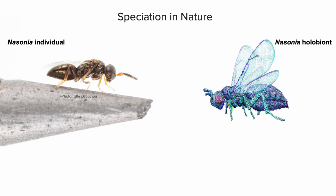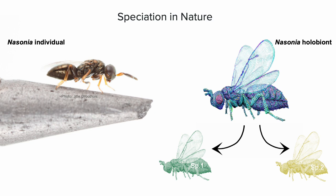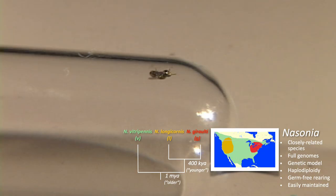Speciation in nature, if you accept some of those arguments, is not just about the thing that we can see, but also about what's underneath the hood — that this wasp known as Nasonia is not just a wasp, but a conglomerate of itself and its microbial cells. If we accept that model, speciation can accrue over time because the host and microbes are changing together, maybe some at faster paces than others, and the holobiont splits into essentially two different populations and therefore maybe two different species that can't interbreed.